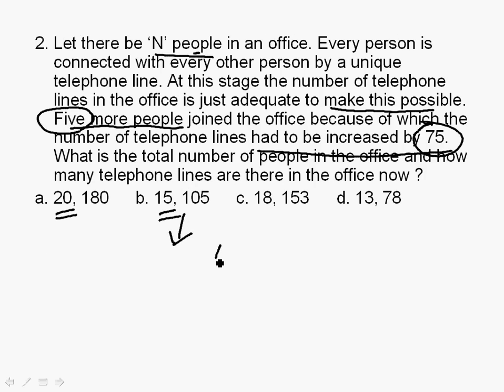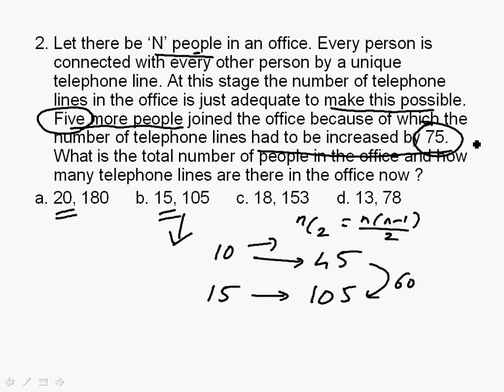If I take 15, that means initially there were 10 people. Number of lines will be NC2 or N into N minus 1 upon 2. For 10, it will be 10 into 9 upon 2 which will be 45. The moment I add 5 more people to 15, it becomes 15 into 14 upon 2 which is 105. So I realize I require 60 more lines. But here the answer is 75 more lines. That means my answer should be more than that. So I will substitute 20 and check out. If I take 20, 20 into 19 upon 2 which will give you 190 which gives you 85 more lines. No, the answer has to be less than that. It means it should be somewhere between 20 and 15. I know the answer is 18.